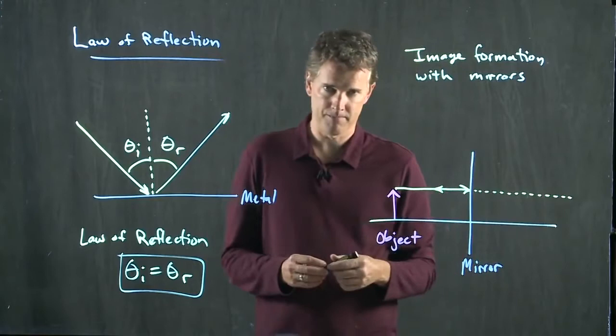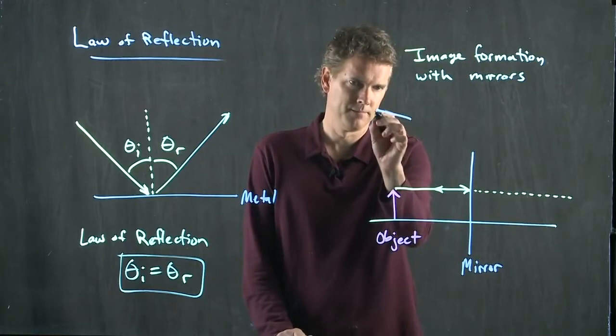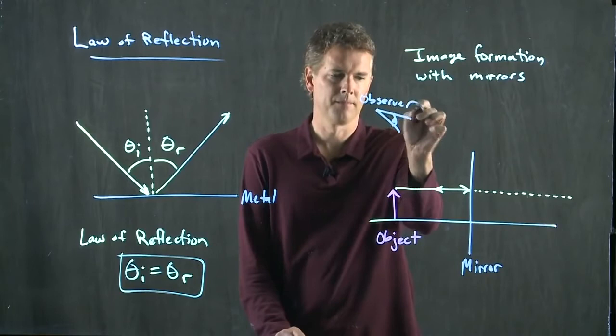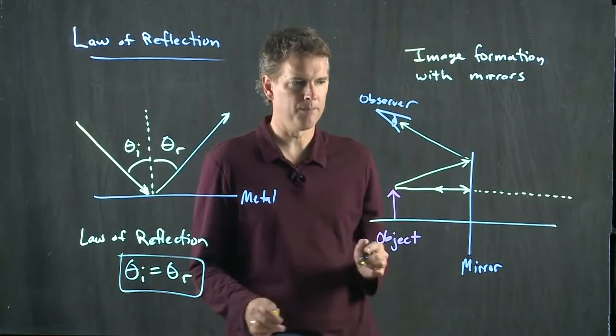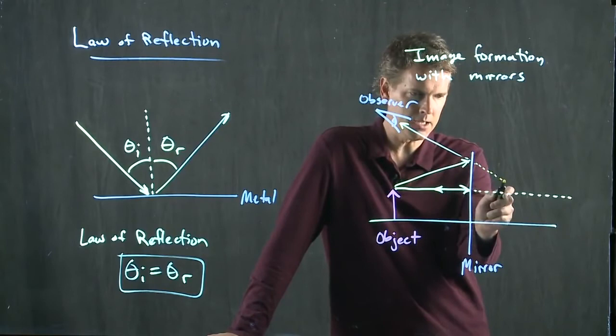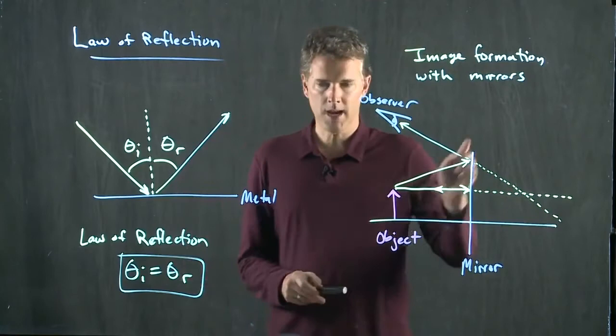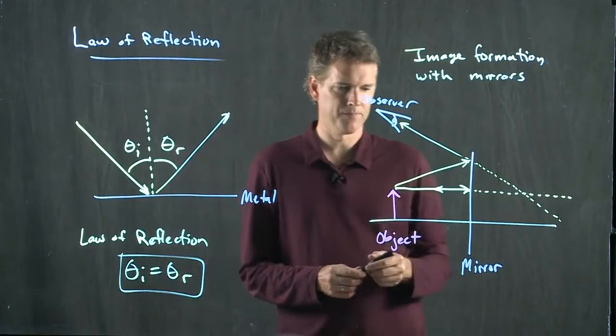If I think about an observer here, there will be a ray from the tip of this object that comes up and bounces off and goes into the eyeball. Now, if I take a dashed line and continue, the point where those two dashed lines intersect each other is where the image is located. So that object has an image that is right here.